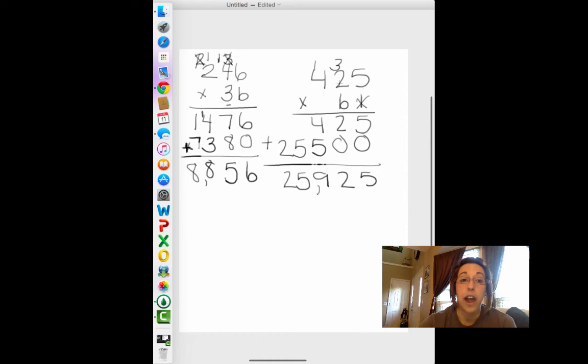Really, it doesn't matter how many place value spots we have in that top number. If we're multiplying by two-digit numbers down here, we're going to continue the same process in the bottom. The ones place starts at the beginning and goes over. The tens place is always going to start with a zero. So, let's go ahead and wrap this video up and see what we've learned.